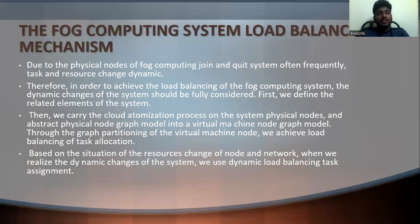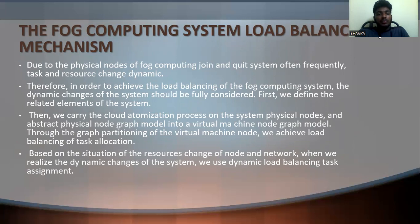The next topic is the fog computing system load balance mechanism. Due to the fixed physical nodes of the fog computing system frequently changing in dynamics, in order to achieve load balancing, the dynamic changes of the system must be considered. First, we define the related elements of the system. Then we carry the cloud automation process on the physical nodes and abstract the physical node graph model into the virtual machine node graph model. Through graph partitioning of virtual machine nodes, we achieve load balancing of task allocation based on resource changes of nodes and network, realizing dynamic load balancing.